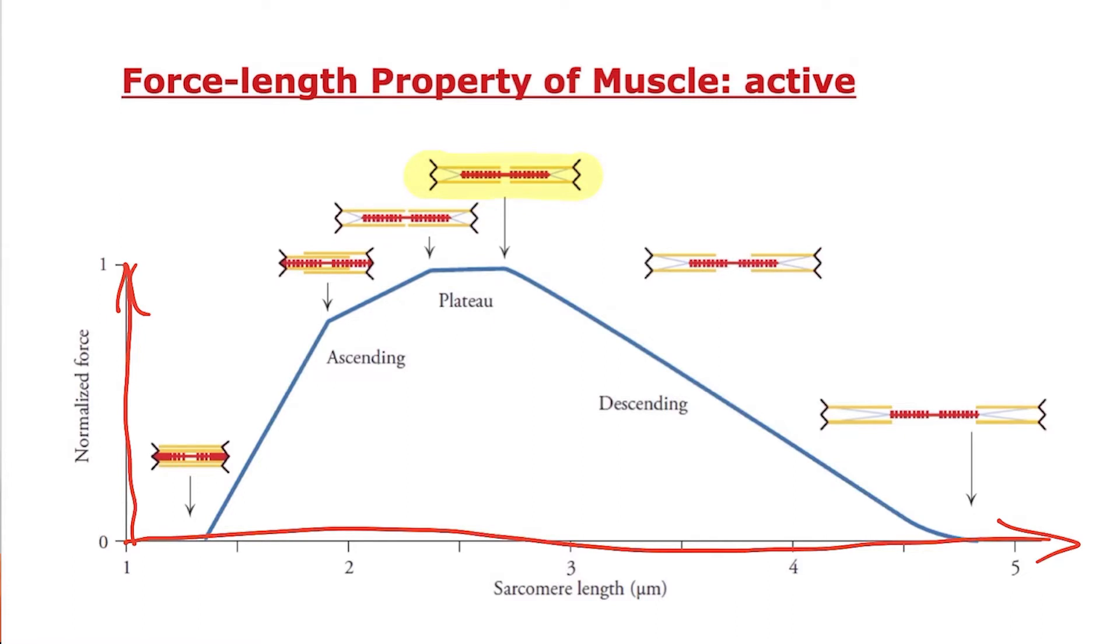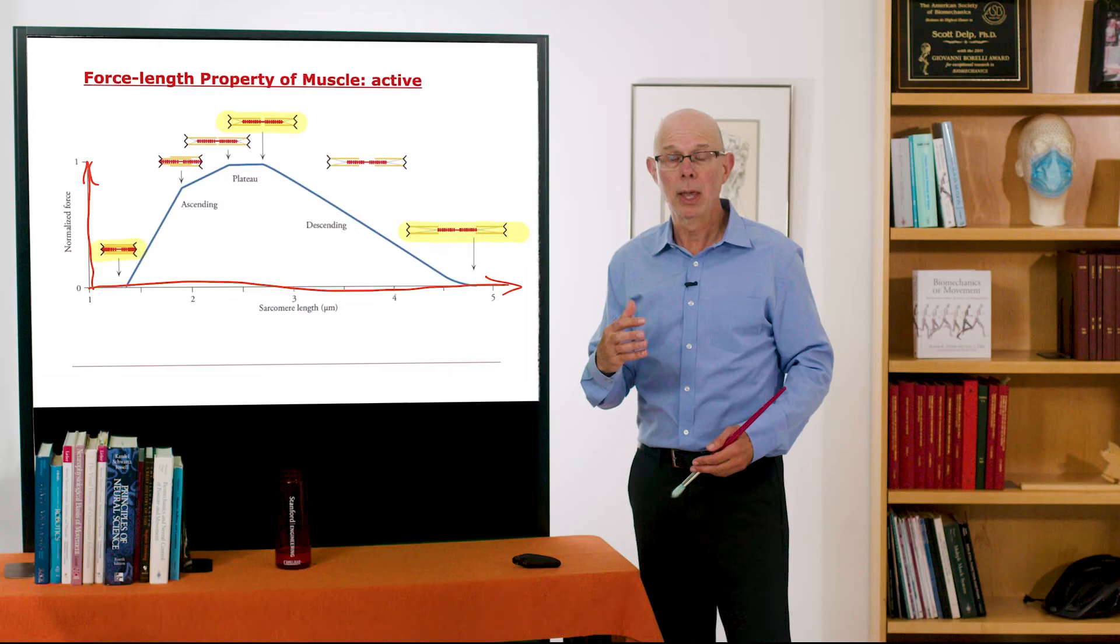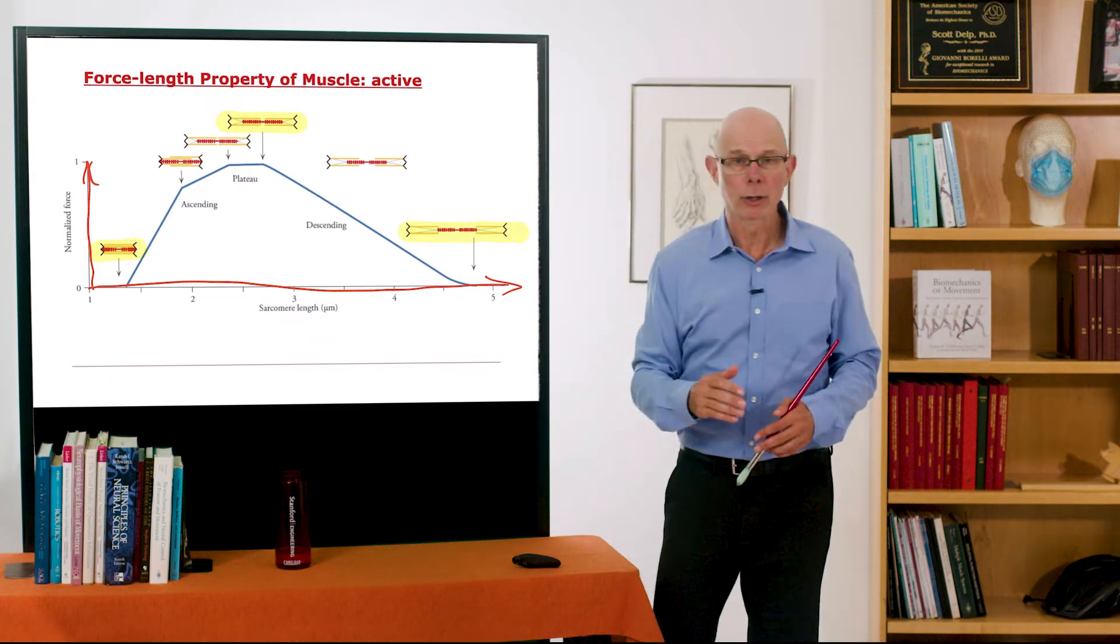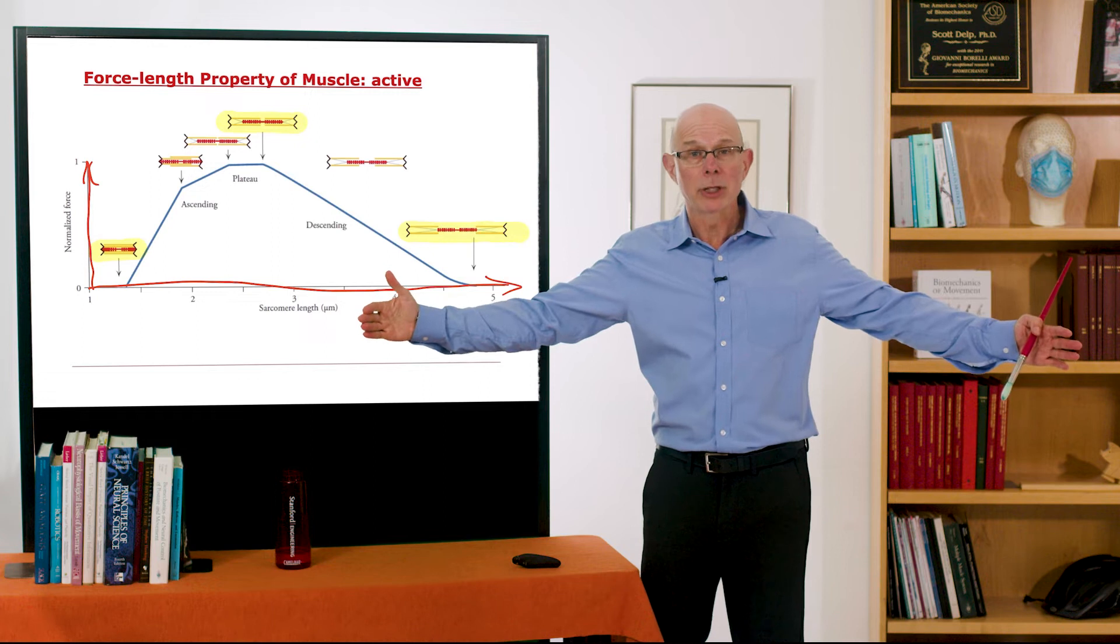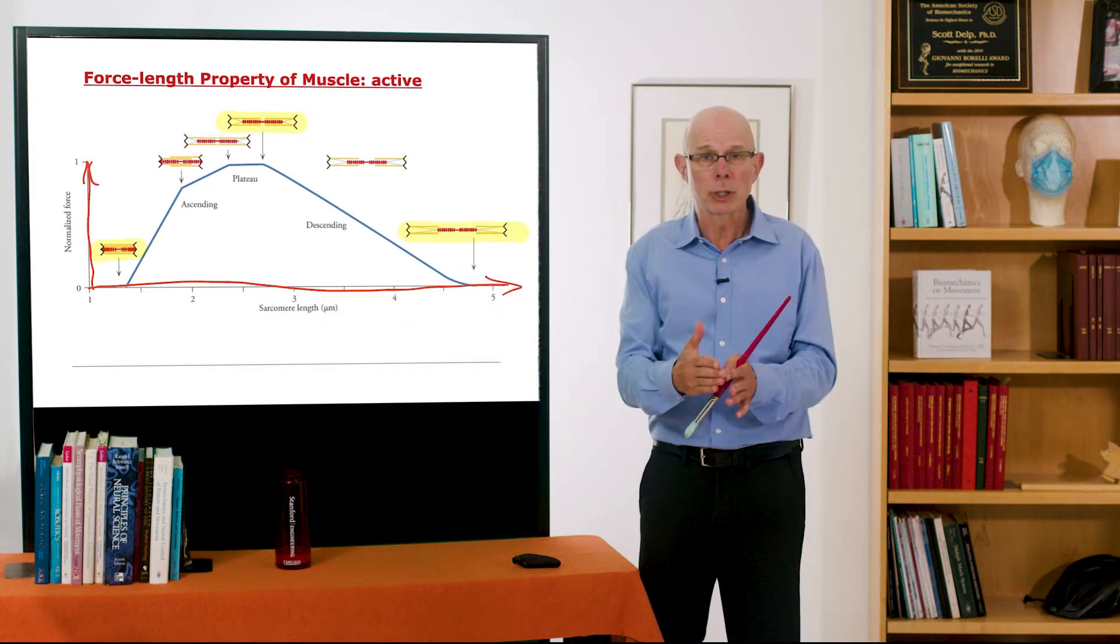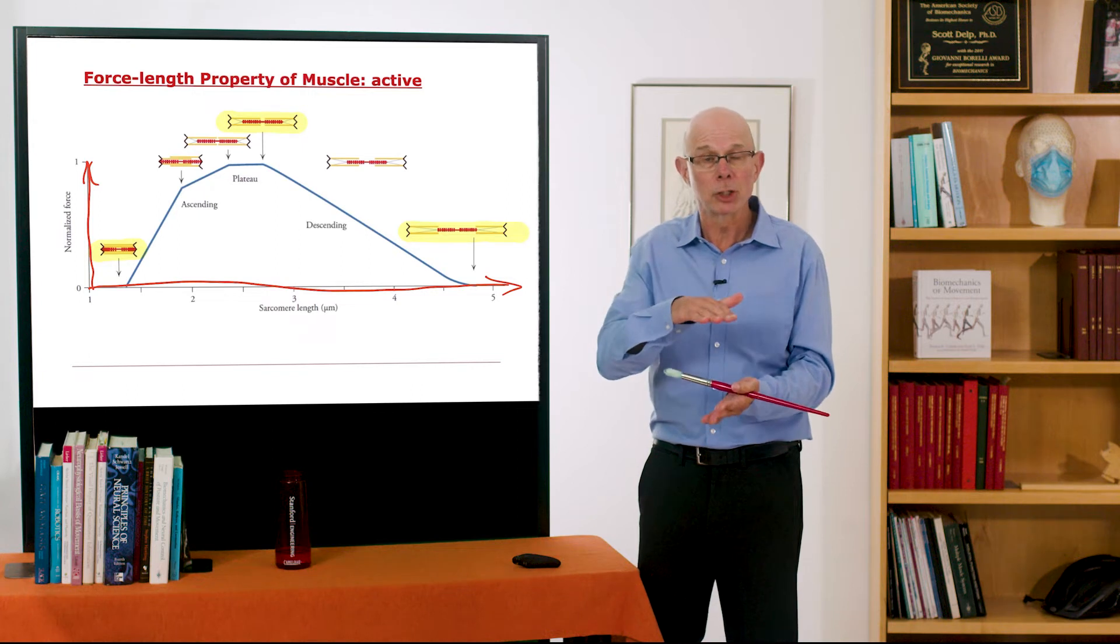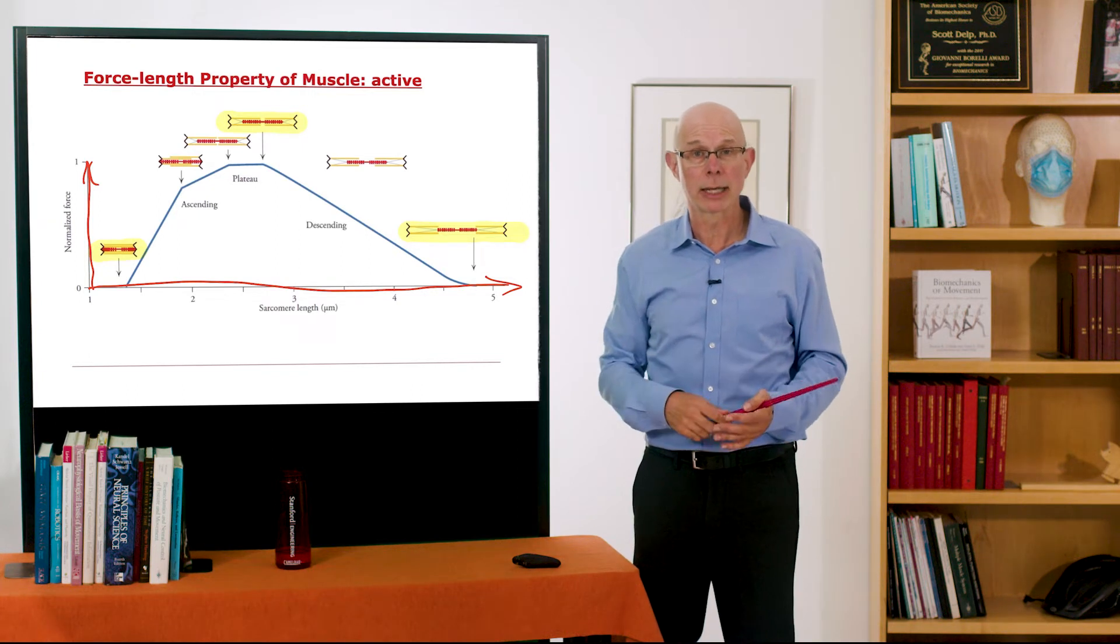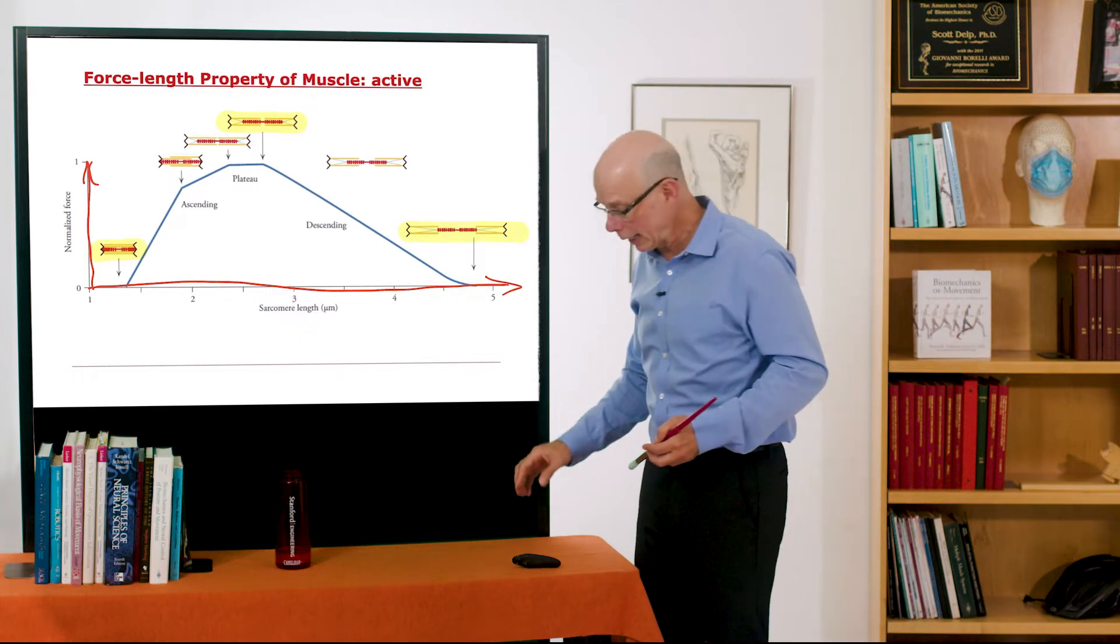Longer than that, you have fewer actin-myosin overlap, and shorter, there's interference of the actin filaments. So we get this force-length relationship. And you can imagine that this is going to be different depending on, for a whole muscle, how many sarcomeres you have in series would give you a different force-length relationship. If you have more sarcomeres in parallel, you'll get more force, and that's going to scale the force-length relationship.